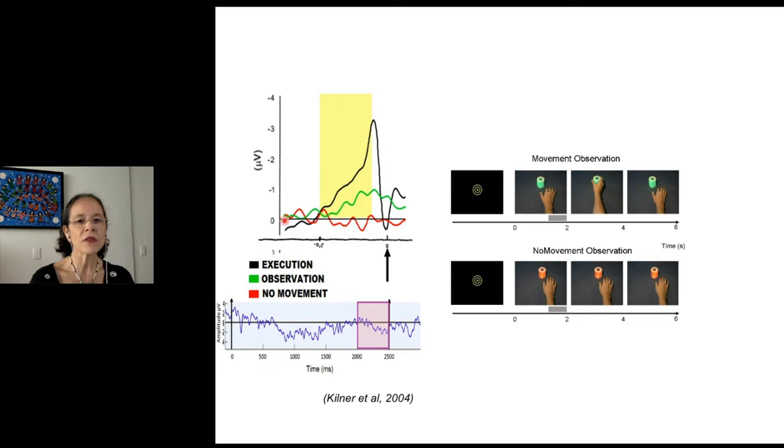There is also readiness potential for the green condition when the participants knew beforehand that there will be a movement occurring in the visual scene, indicating that the brain indeed prepares for an upcoming movement performed by others. Finally, no negative slope could be identified for the no movement condition.